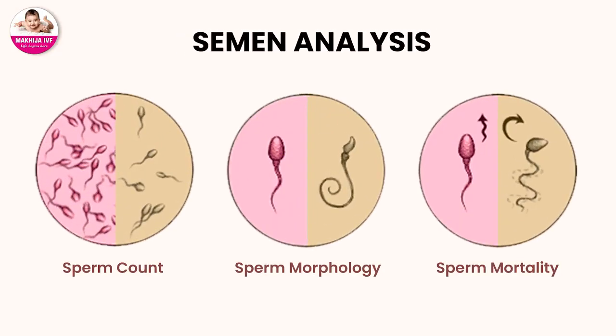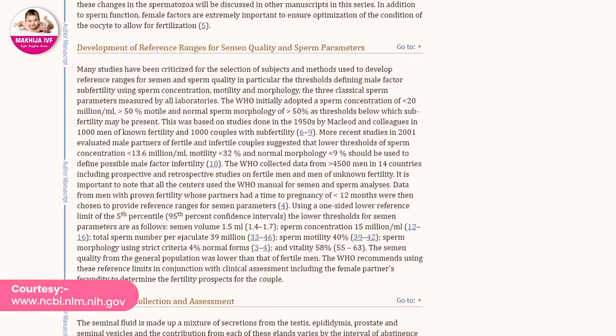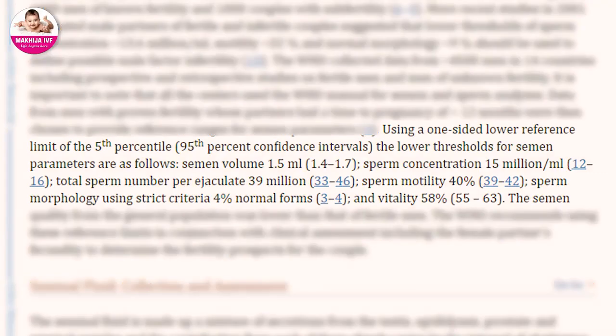After two to three days of abstinence, we perform the test in the IVF lab. In that, we study the physical parameters of the semen. Normal semen analysis should show 60 to 120 million sperm. According to WHO 2010, the minimum criteria should be 15 million per mL sperm concentration, 32% progressive motility, and a normal sperm morphology, for the person to be in the fertile category.